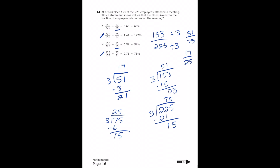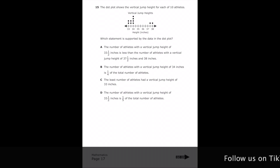Letter F has the fraction 17/25, so now we just need to convert to a decimal to determine the correct answer, since the remaining choices have different decimals. Dividing 17 by 25: 25 won't go into 17, so we add a decimal and zero — 25 goes into 170 exactly six times (25 × 6 = 150), leaving a remainder of 20. That's clearly not letter H whose first decimal is 5, so the correct answer is letter F.